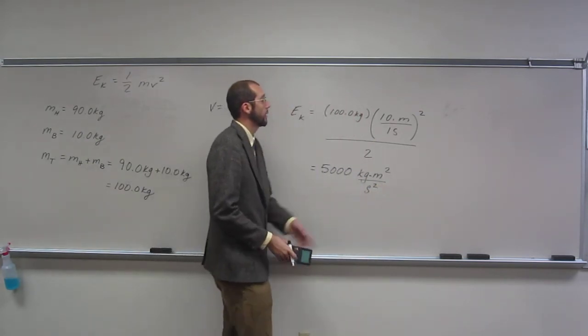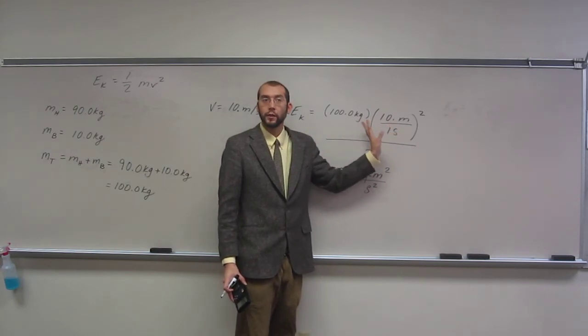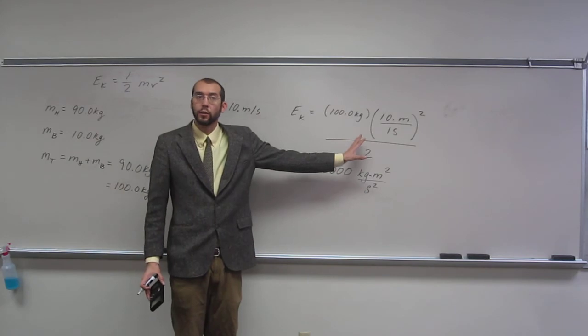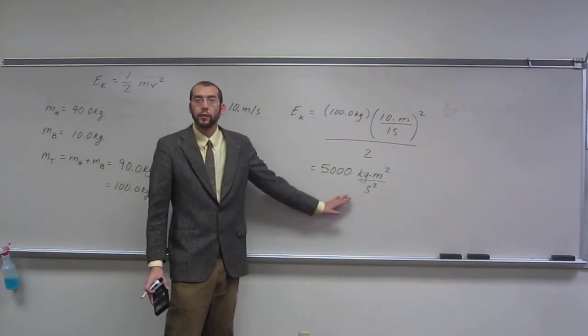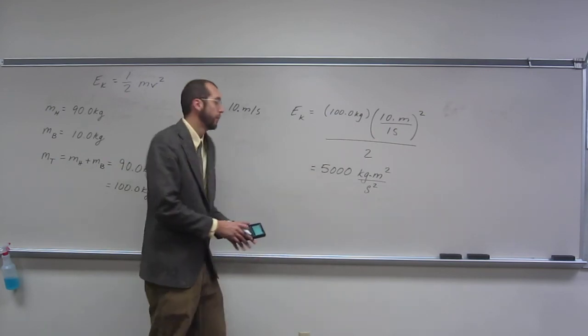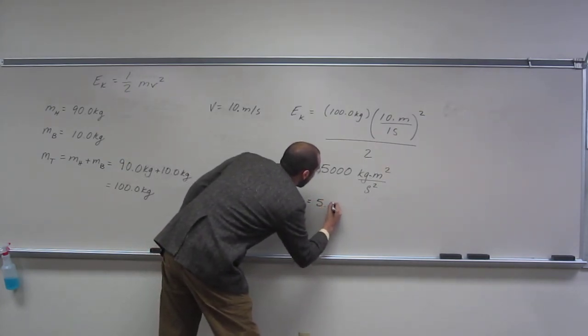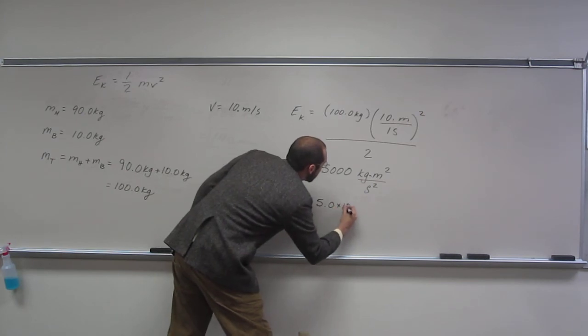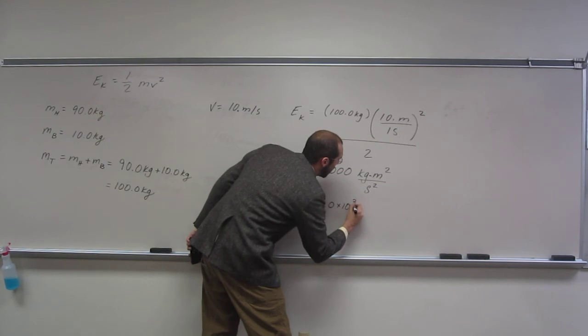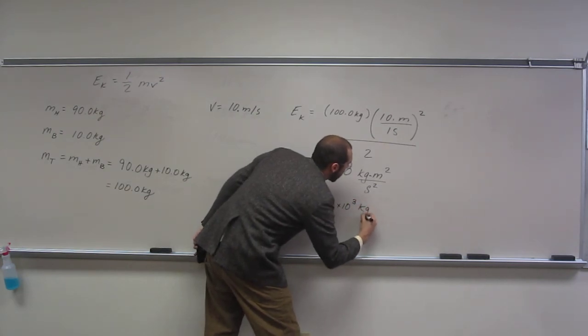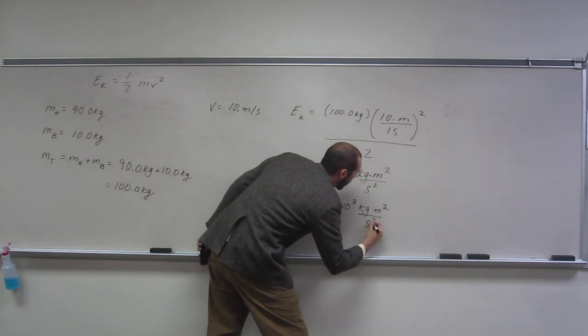So 5,000 kilograms meters squared per second squared is the units. But notice, this thing's only got two sig figs. Does everybody see that? Is everybody cool with that? Only two sig figs on it. So we've got to have our answer to two sig figs. So it's going to be 5.0 times 10 to the 1, 2, 3 kilograms meters squared per second squared.